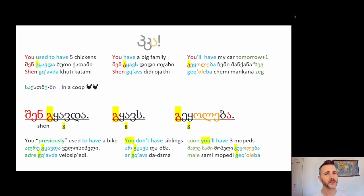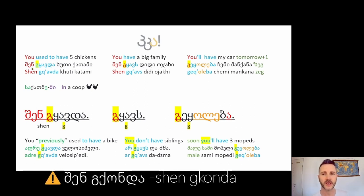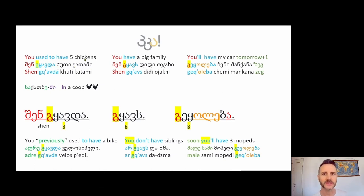Slide three now deals with you, what you have, what you had and what you are going to have in relation to living things. I chose chickens. Chickens in the UK are kept in a coop. This would be the sa katmeshi. That means ind. Sa katme is where they're kept. Shen qchavda khūti katami. It would be incorrect for you to say shen qchonda khūti katami because chickens are living things.